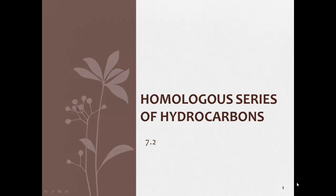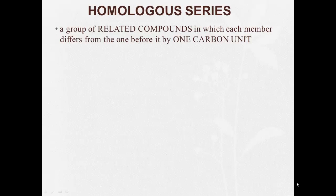Welcome to 7.2 homologous series of hydrocarbons. What the heck is a homologous series? Homologous series is a group of related compounds in which each member differs from the one before it by one carbon unit.